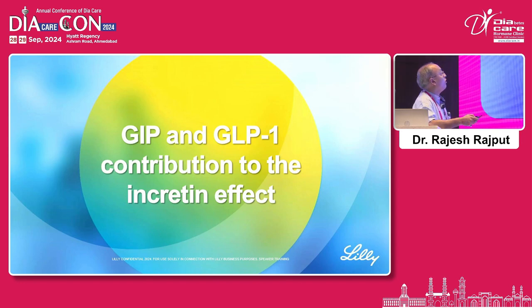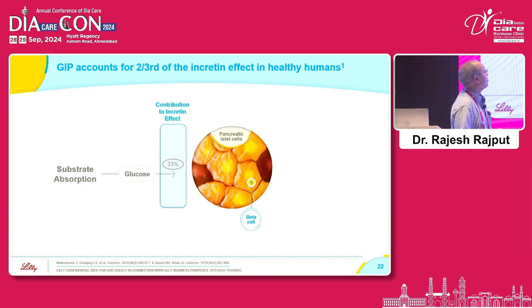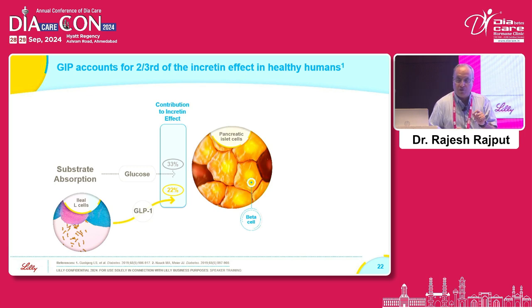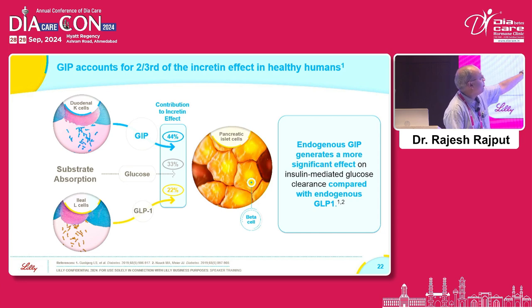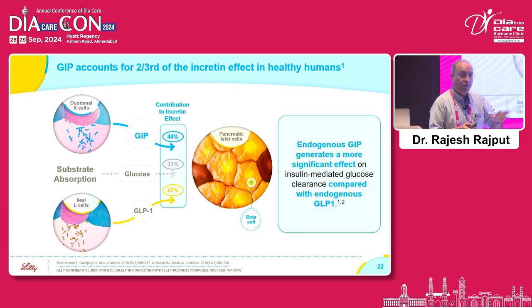This augmentation actually constitutes the majority — two-thirds — of the insulin secretion response. To show the absolute contribution: whenever you eat something, glucose per se is responsible for 33% of insulin secretion. GLP-1 is responsible for another 22%. GIP is responsible for 44% of insulin secretion. Together, GLP-1 and GIP are responsible for 70% of insulin secretion in response to nutrient load.